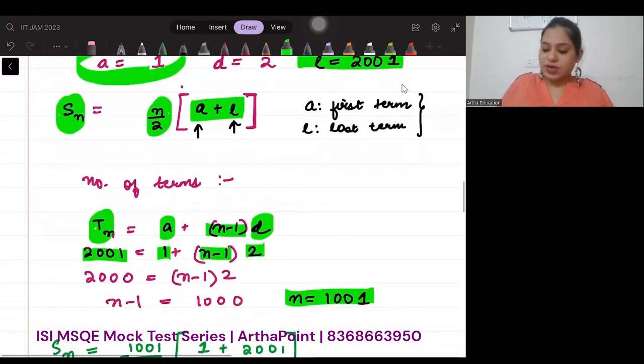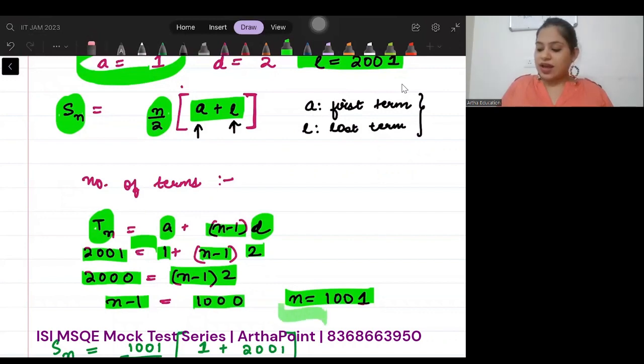So I will just bring 1 on this side. So 2000 is equal to (n minus 1) into 2. So n minus 1 will be 1000. So your n will be 1001.